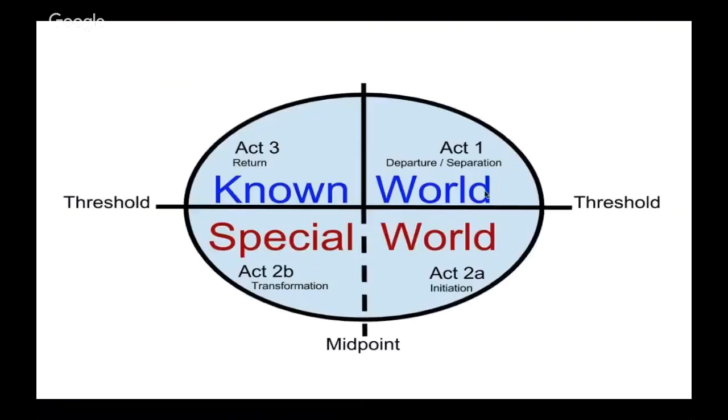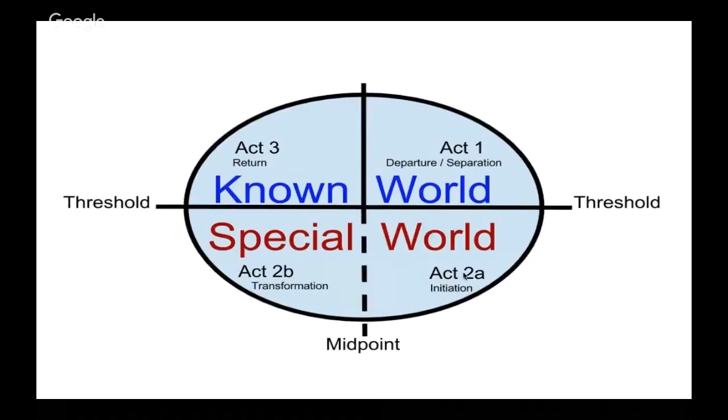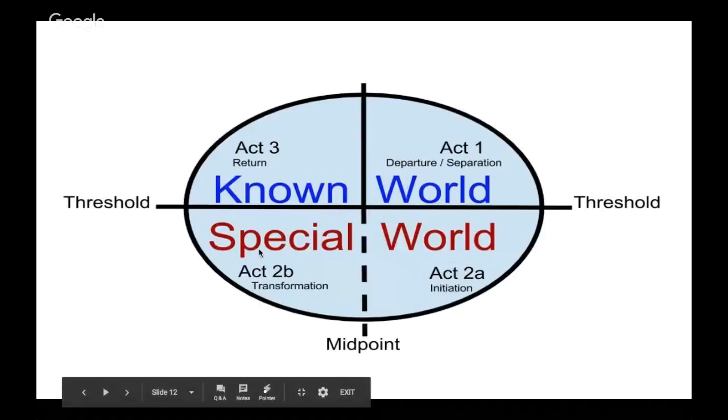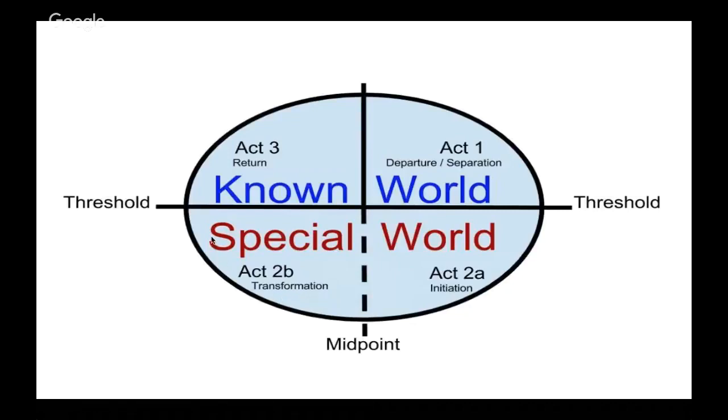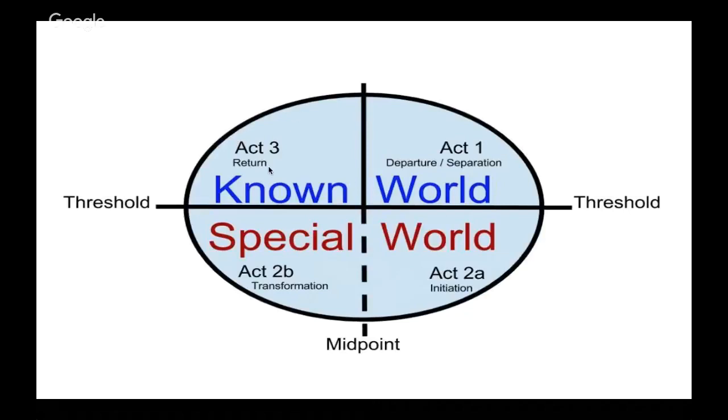Here I have another graphic that just depicts what's going on. Here's act one. You start out in the normal world. They depart the normal world. They cross the threshold into act two. As you can see, act two is huge. It takes up half of this circle. You have two parts: the initiation phase and then the transformation phase where the hero is enlightened. Then they cross back into the threshold into the known world again in act three. They use the new powers and knowledge that they learned here in the special world to restore society in the known world. And that is the three-act structure.